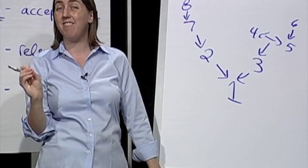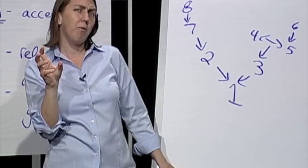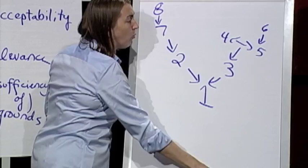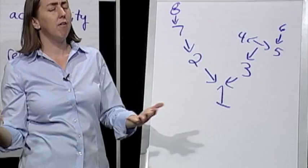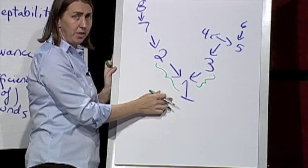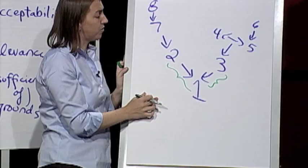You remember with acceptability, we really could take the premise out of the context of the argument. The accuracy of the diagram really didn't matter because it's just a question of, is this claim acceptable? But when we're dealing with relevance, we have to know what the claim is supposed to be doing. We have to be clear on the specific job. So relevance would be asking, is two relevant to one? Is three relevant to one? Because it's three's job to provide evidence for one, and it's two's job to provide evidence for one. But the relevance of seven is related not to one, but to two.